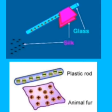Plastic rods become positively charged and glass rods become negatively charged. When we place them beside each other, they attract each other because they have unlike charges — one is positive and another is negative.